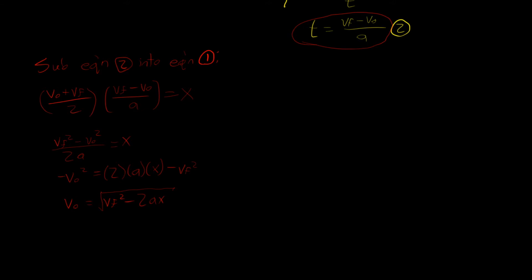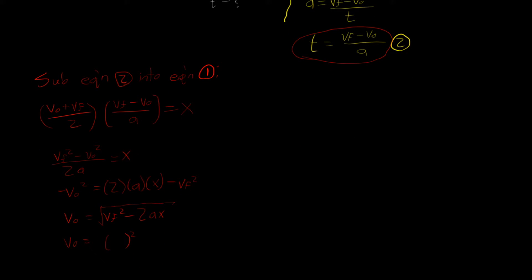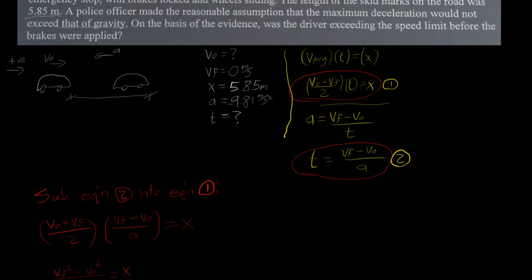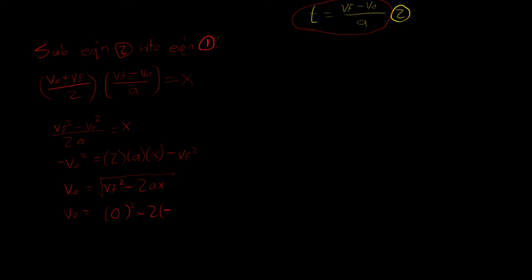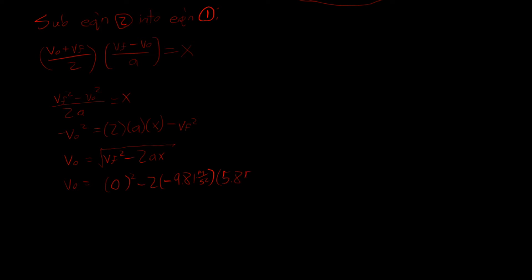Let's plug in our values. V₀ = √(V_f² − 2 × a × x). The final velocity was 0, so V_f² = 0. The acceleration is −9.81 meters per second squared, since we assumed rightward is positive and the deceleration acts to the left. The distance x is 5.85 meters. So we have V₀ = √(0 − 2 × (−9.81) × 5.85).